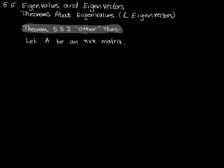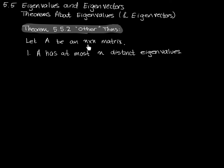Our first theorem is: if A is an n by n matrix, then A has at most n distinct eigenvalues. If you find all of the eigenvalues of A — some square matrix with dimensions n by n — there aren't going to be any more than n of those. There are only going to be up to n eigenvalues. There might be fewer, and in fact there might be duplicates, which is why the word 'distinct' is so important here.